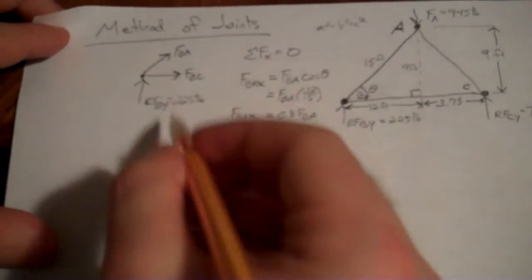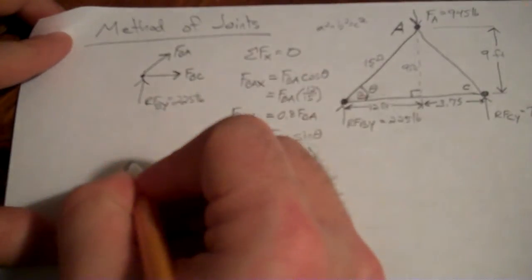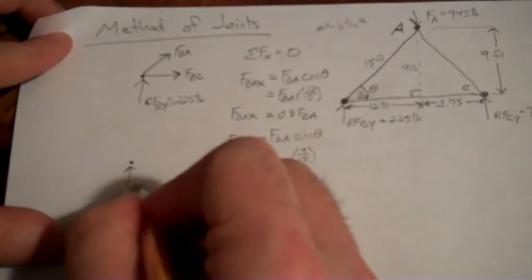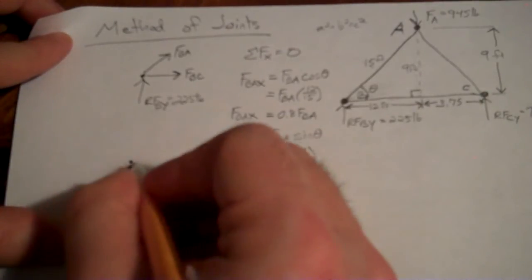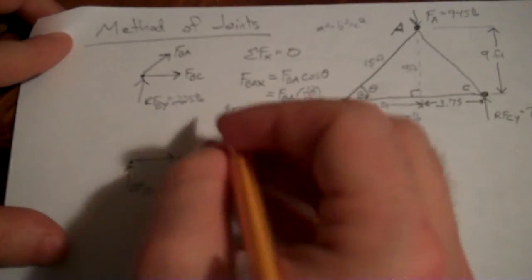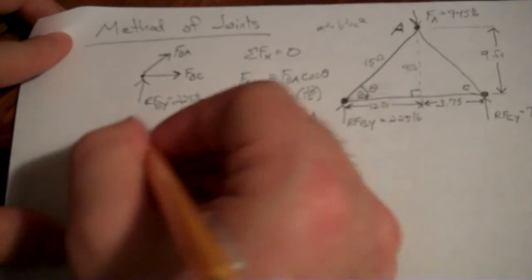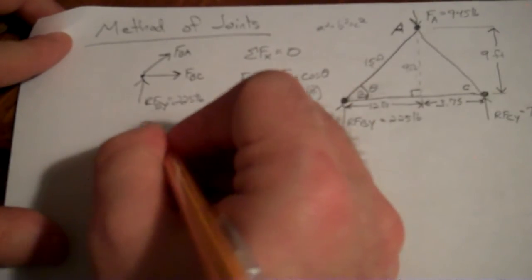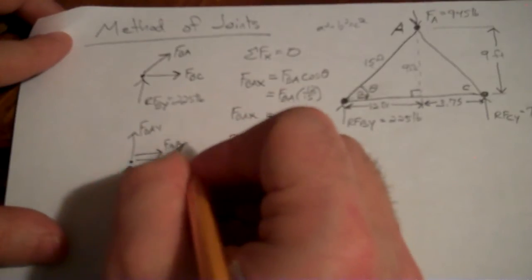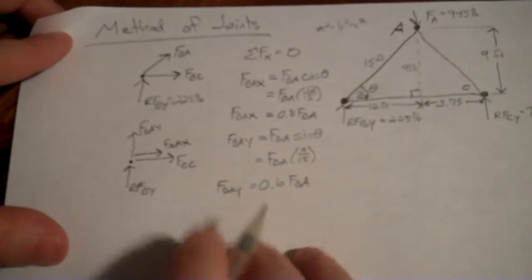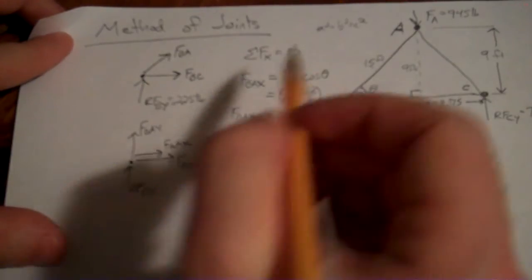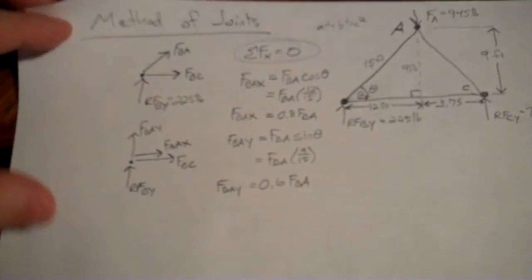So I'm going to rewrite this free body diagram to break FBA into components. So again, I have RFBY. I have FBC, which is already horizontal, don't need to break that into components. And we have FBA Y and FBA X. So now we have two forces in the X, two forces in the Y, and now we can apply our equilibrium equation over here.